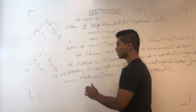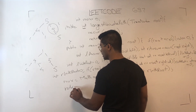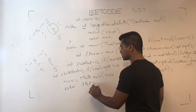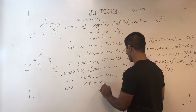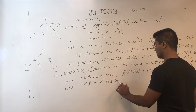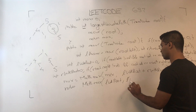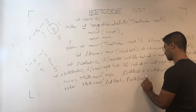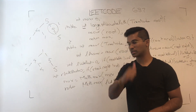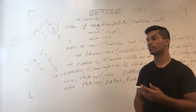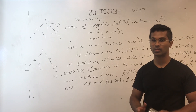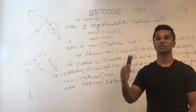Here's the important part: what we need to do — and I got confused with this — is return the maximum of l_with_root and r_with_root. The reason we do this is because we need to know which is going to give us the longest path, and that's why we just take the maximum of that. So that's how you solve LeetCode 687.